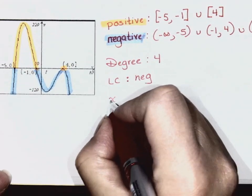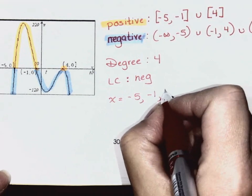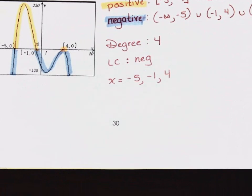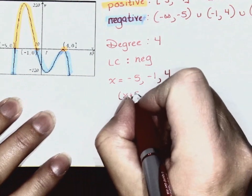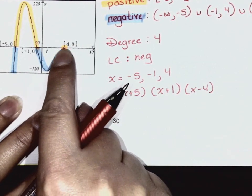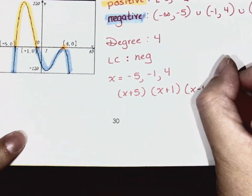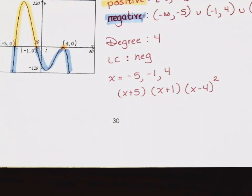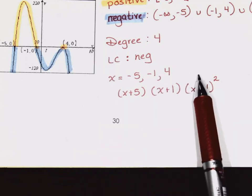X-intercepts: negative 5, negative 1, and 4. Now turn them into factors: (x + 5), (x + 1), (x − 4). But what's happening at x − 4? Multiplicity of two — we've got two of them. You can write it out twice, but we're mathematicians and we like to be efficient, so we write (x − 4) squared. And if it drags, you do the point with an exponent of three.